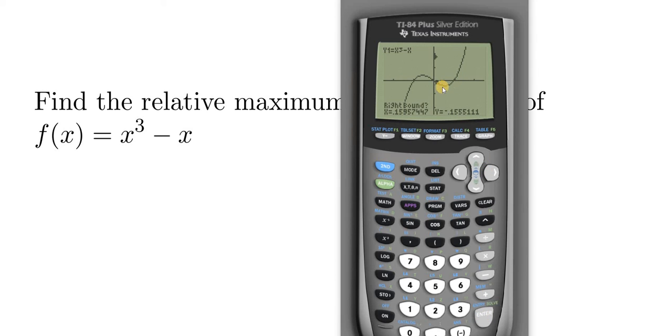Right bound. So now we have to be to the right of this low point. So your flashing cursor needs to be over here. So I'm going to hit the right arrow key a bunch of times. Hit enter one time. It says guess. Just hit enter again. There's the answers. So the minimum value occurs at this ordered pair. There's your x, there's your y. The actual minimum is the y value. So negative 0.38.